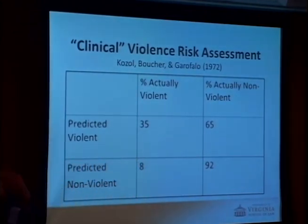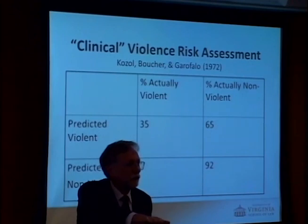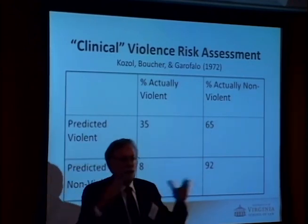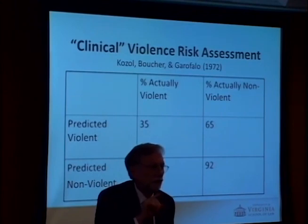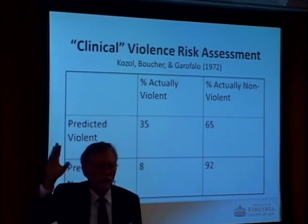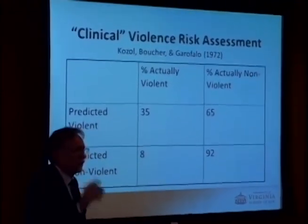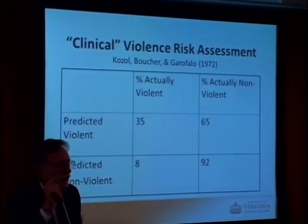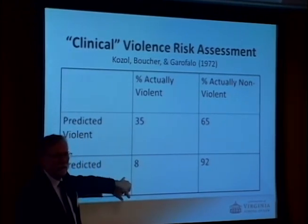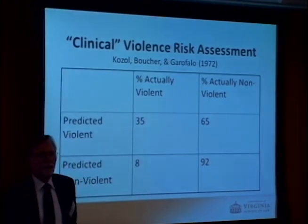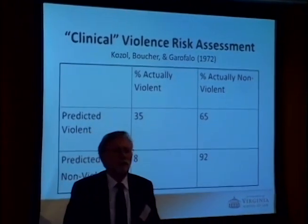At the end of that time, the team told the court their judgment, and if they predicted the person would be violent, usually the person was kept in the forensic hospital. If they said they were safe, they were often released — but thereby you couldn't study them. However, for a couple of hundred people, even though the clinician said the person was likely to be violent, for technical legal reasons they had to be released, which allowed a study of clinician accuracy. The criterion was rearrest for an FBI violent index crime — murder, rape, robbery, or assault — within five years. Of those predicted safe, 8% were rearrested for a violent index crime; of those predicted violent, 35% were rearrested.